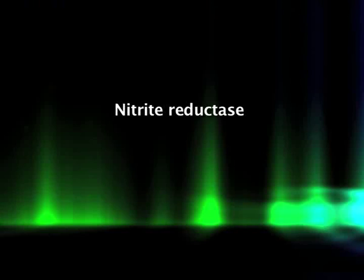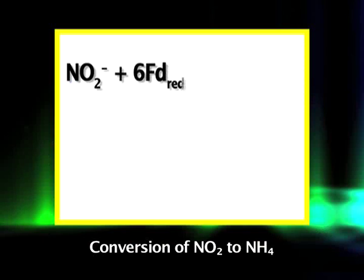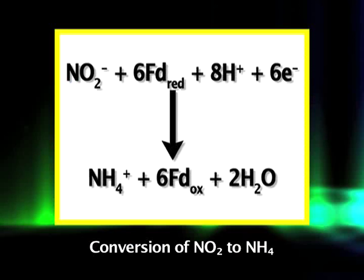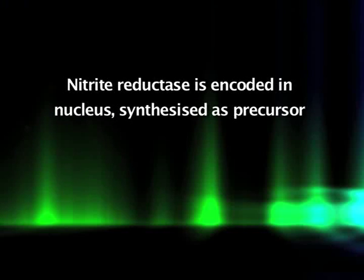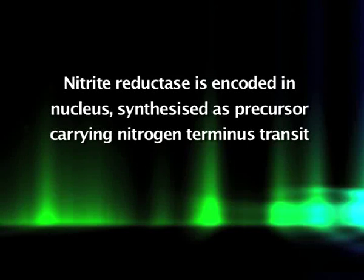Nitrite is a highly reactive and potentially toxic ion. Plant cells immediately transport the nitrite generated during nitrate reduction from the cytosol into chloroplasts in leaves and plastids in roots. In these organelles, the enzyme nitrite reductase reduces nitrite to ammonia. Chloroplasts and root plastids contain different forms of the enzyme, but both forms transfer electrons from ferredoxin. Ferredoxin derives from photosynthetic electron transport in chloroplasts and from NADPH generated by the oxidative pentose phosphate pathway in non-green tissues. Nitrate and light induce the transcription of nitrite reductase mRNA.